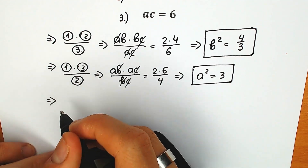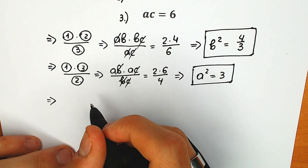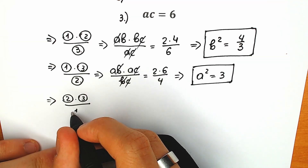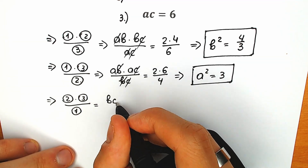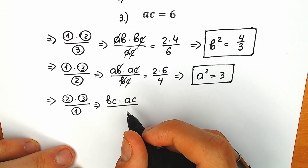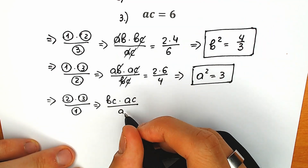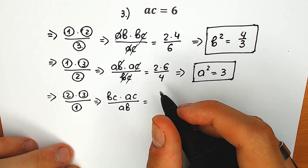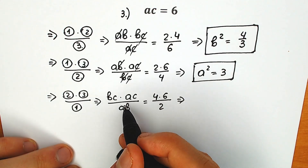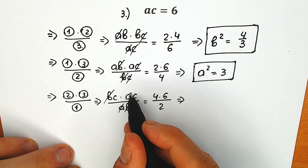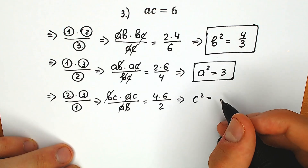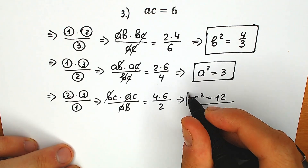For the last combination, let's use the second equation times the third equation, divided by the first one. So bc times ac, divided by ab. We can easily cancel our b and cancel our a, leaving only c squared. So c squared equals 4 times 6, which is 24, divided by 2, equal to 12. So c squared equals 12.